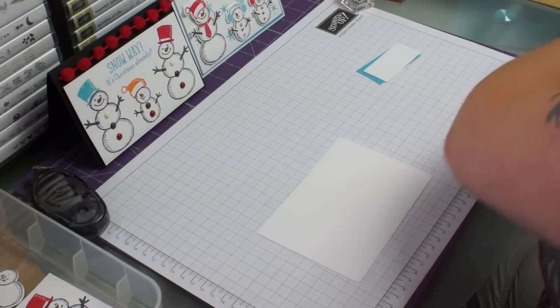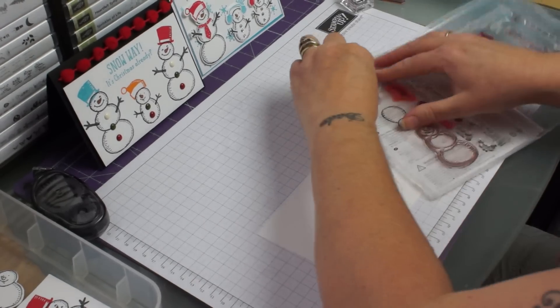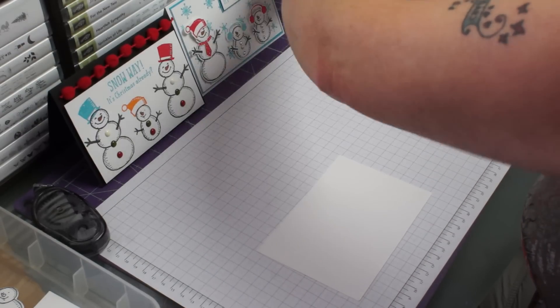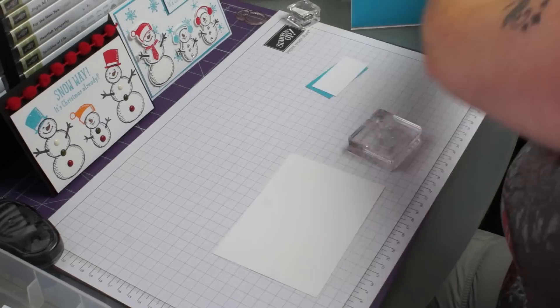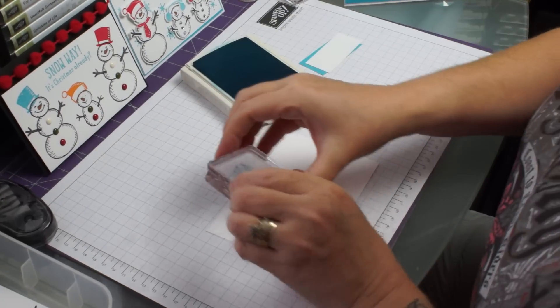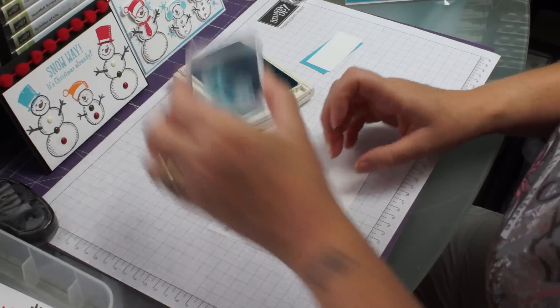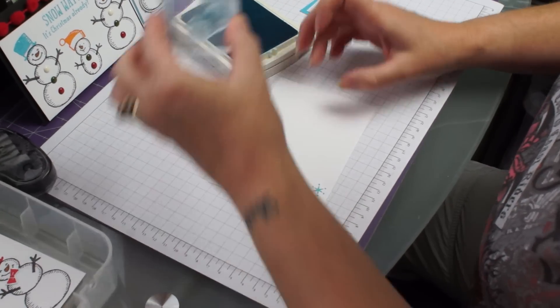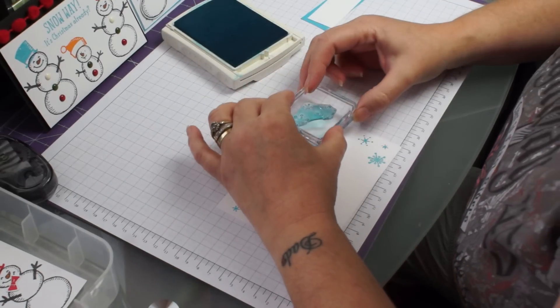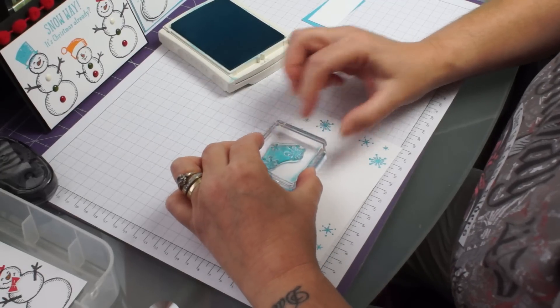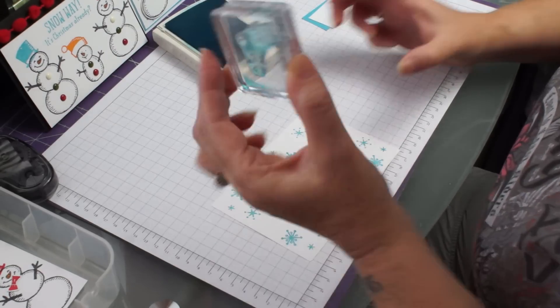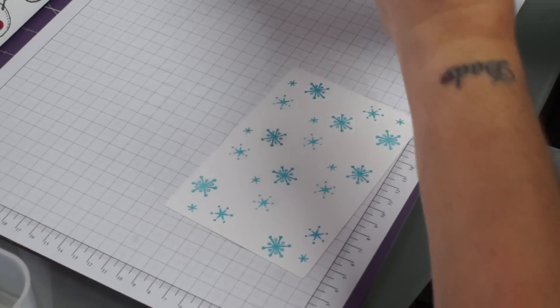Then for our snowflake you need our stamp set. And it's this piece here. Pop that on there. And tempting turquoise again. I find tempting turquoise works very well with this set. And I'll just ink it up. It's just random really. Just pop your snowflakes in the corners. And then I'll just put some extra ones so that I filled my page.